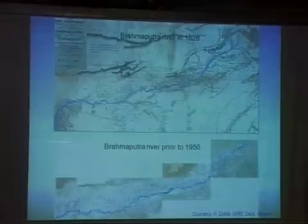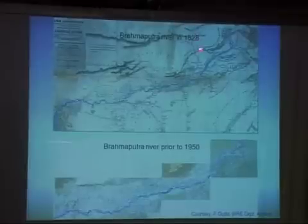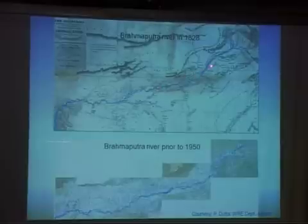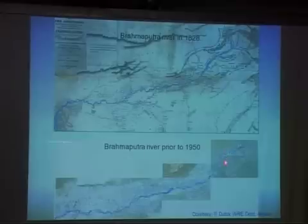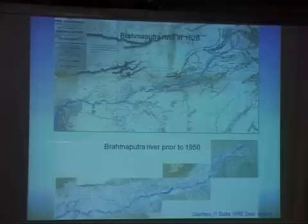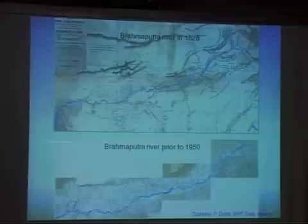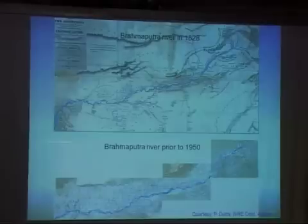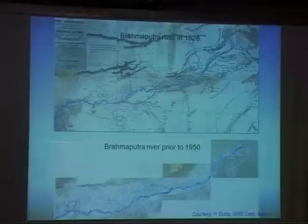Some of the historical maps we have from 1828 show the Brahmaputra as a much thinner river. Prior to 1950, it was still a different river. In 1950, there was a huge earthquake, and after 1950, all the lesser Himalayan terrain became so destabilized that it started pouring in sediment. The two scenarios of 1828 and 1950 are totally changed today.